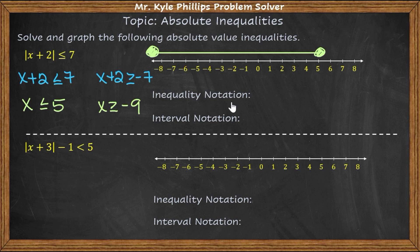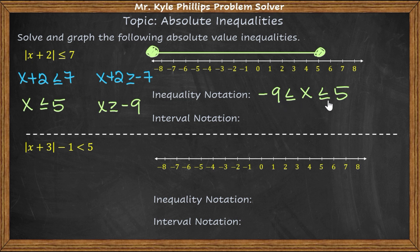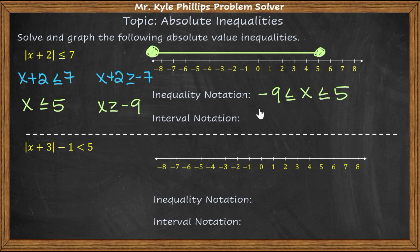They want us to write this in inequality notation. Just like interval notation, the smaller number comes first. So negative 9 is less than or equal to x, which is less than or equal to 5. That's the same as saying x is greater than or equal to negative 9 and x is less than or equal to 5. For interval notation, since both circles are filled in, we use brackets: [−9, 5].